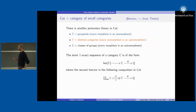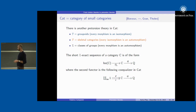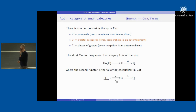There is another pretorsion theory in Cat: the torsion part consists of groupoids, the torsion-free part is skeletal categories, and their intersection is classes of groups. For every category, we have a short exact sequence: we take the isomorphisms of the category, and the torsion-free part is defined as the equalizer that identifies objects which are isomorphic — essentially collapsing isomorphic objects into single objects.